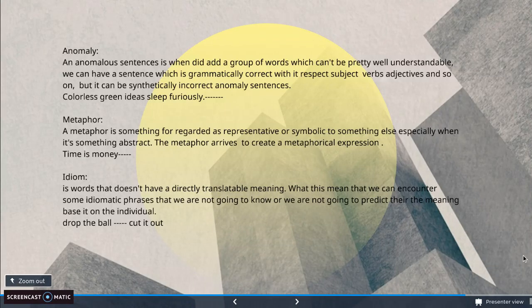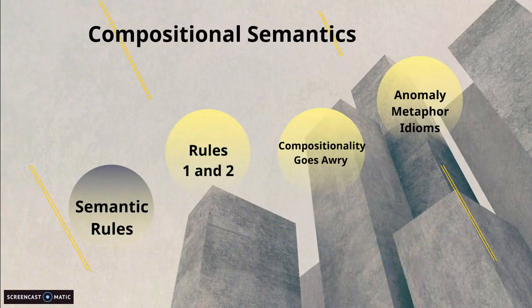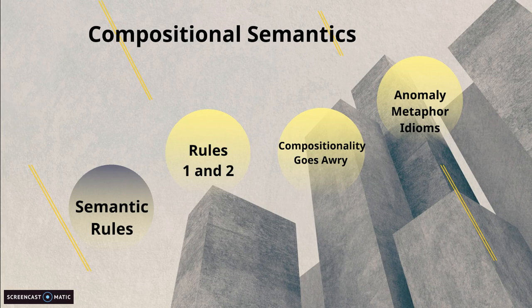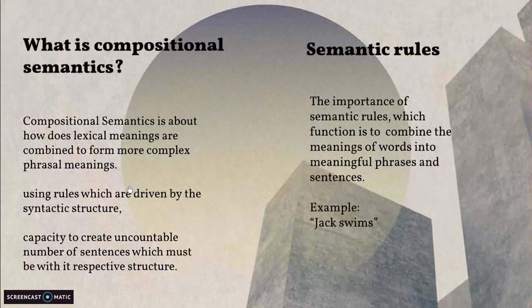Hello guys, hello teacher. I'm going to give you my explanation about compositional semantics. As you can observe, I have divided it into four groups. First, I'm going to explain what compositional semantics is, then the semantic rules in a general way. Next, I'll specify rules number one and two, then a brief introduction about when compositionality goes wrong, and lastly anomaly, metaphor, and idioms.